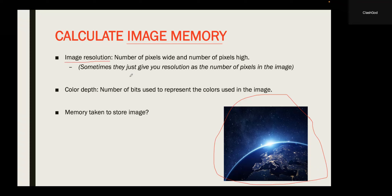The first key concept is image resolution. Image resolution is basically the number of pixels wide and number of pixels high of an image. Now, when you calculate image memory, image resolution is just given as a number — the total number of pixels in the image. For example, if I have an image that is 3 pixels wide and 3 pixels high, the image resolution is just 9 pixels.